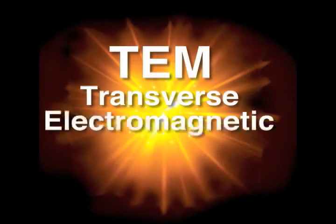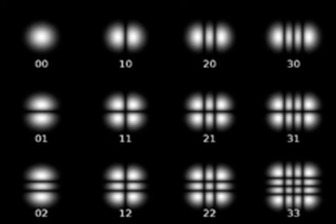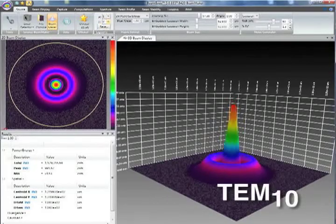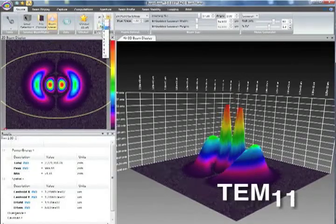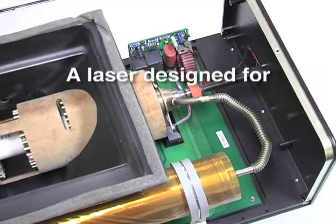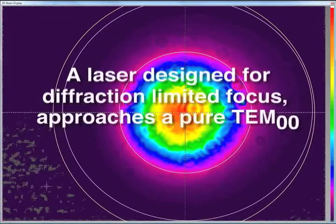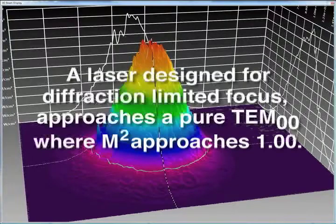TEM stands for transverse electromagnetic mode, where electric and magnetic field vectors are both normal to the direction of propagation. The digits refer to mode content, where higher values indicate higher modal orders. All laser beams consist of mixes of various modal orders. Control of the mode mix is one of the goals of the laser designer. A laser designed for diffraction limited focus is one that approaches a purely single mode TEM00, where the m squared value approaches 1.00.